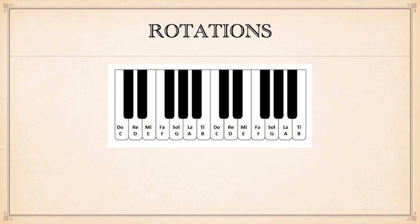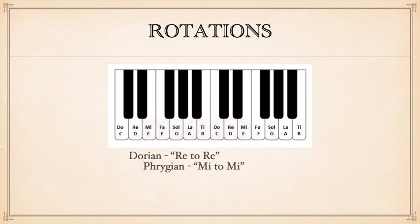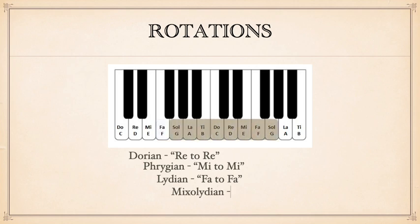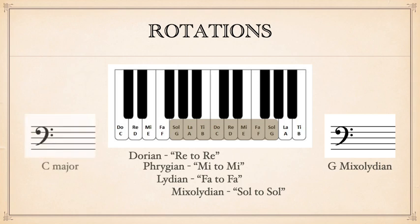For instance, here's the C major rotation: Dorian being from Re to Re, Phrygian from Mi to Mi, Lydian from Fa to Fa, or Mixolydian from Sol to Sol. So if Mixolydian is Sol to Sol with no sharps or flats in its key signature, what is the key signature a fifth down to Do? Yes, of course — that's C major, the no-sharps-and-flats key signature. So sometimes you may be able to check your work with this relative relationship as well.